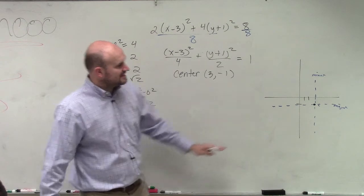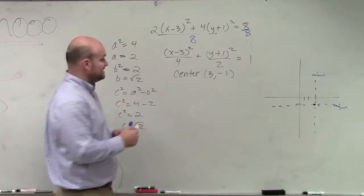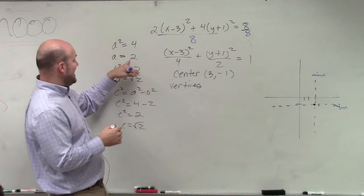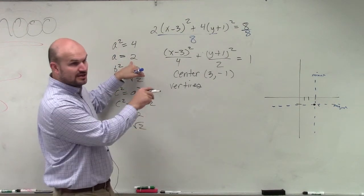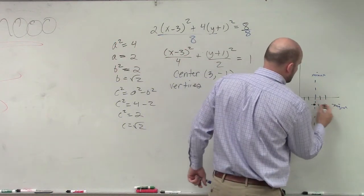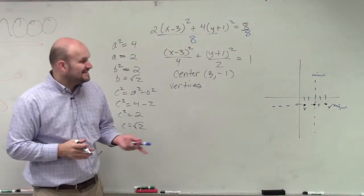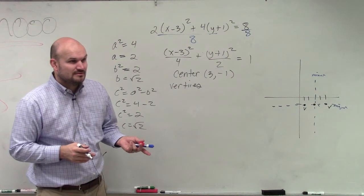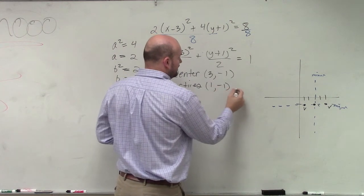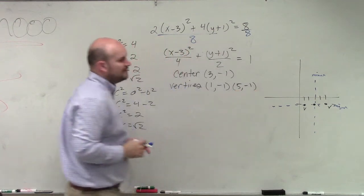So we know that, so since the major axis is going left or right, the distance from my center to my vertices, which I need to figure out, right? My vertices are going to be a distance of A away from my center, right? And they're going to be going left or right, because they lie on the major axis. So I'll go 2 to the right and 2 to the left. Is it kind of easy for me to figure out what those coordinate points are? They're going to be 1, negative 1, and 5, negative 1.